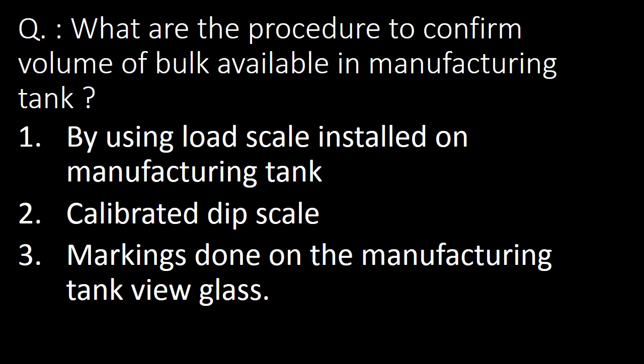Next question: what are the procedures to confirm the volume of prepared bulk available in a manufacturing tank? There are three methods. The first method is by using the load cell installed on the manufacturing tank — this is considered the most accurate. The other two methods are using a calibrated dip scale and using volume markings on the manufacturing tank view glass.